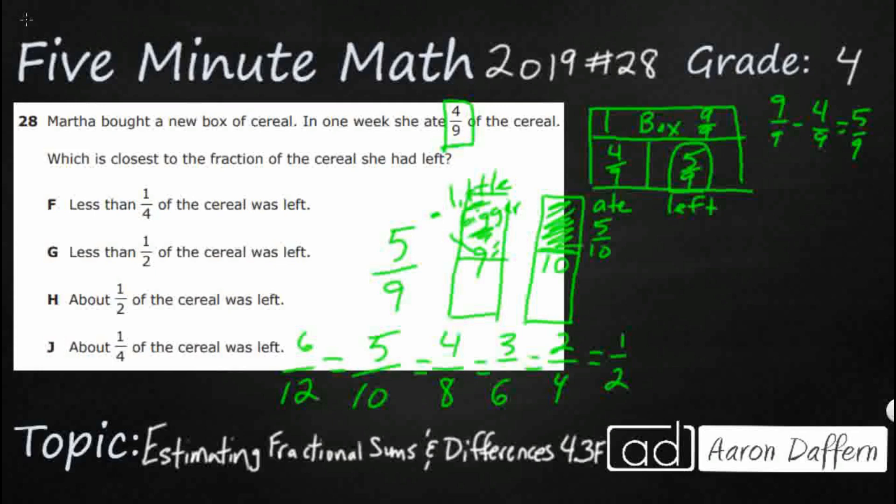So we can actually say we know that our five-ninths is going to be a little bit bigger than our five-tenths. Once again, because these ninth pieces are a little bit bigger than the tenths. So let's see if we can look at some of our answer choices.